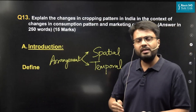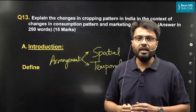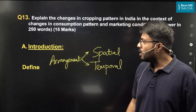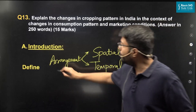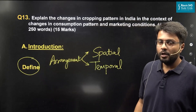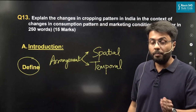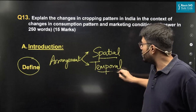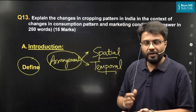We will follow the standard template of starting an answer with an introduction, then giving a definite body before concluding. The best way to start this answer is by providing the definition of cropping pattern. Cropping pattern refers to both spatial as well as temporal arrangement of crops in a definite geography.